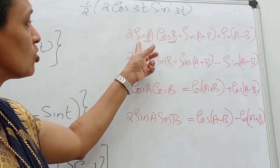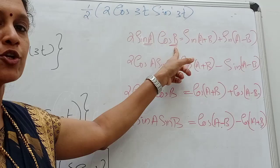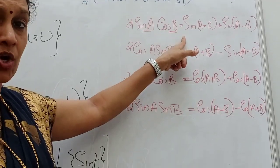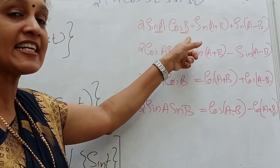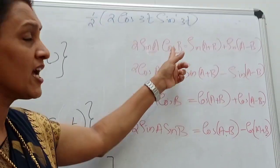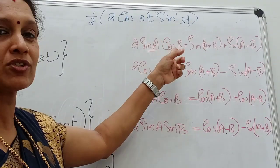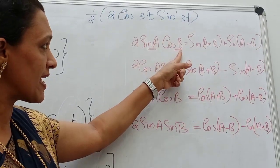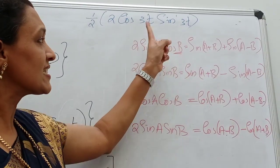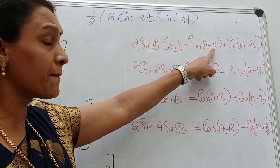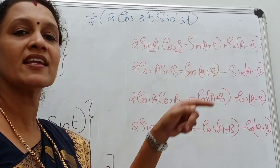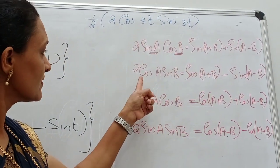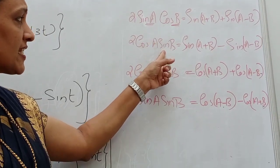If you have 2 sine A cos A, you don't write this formula — only if you have different angles can you use this formula. So 2 sine A cos B equals sine A plus B plus sine A minus B.